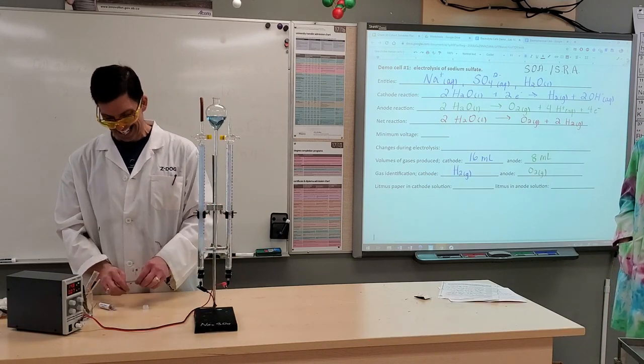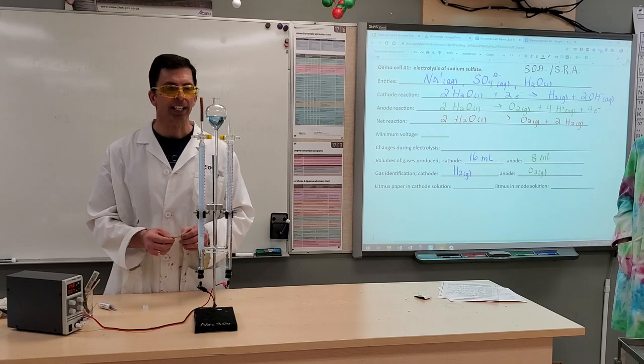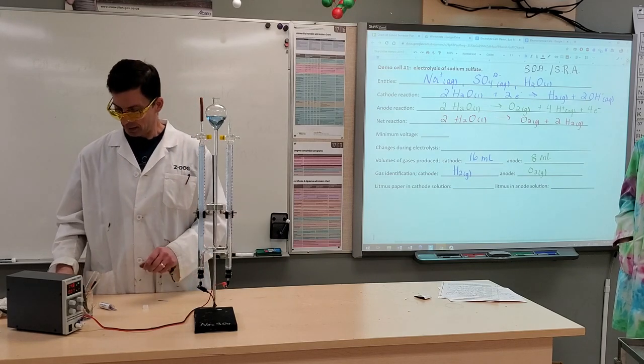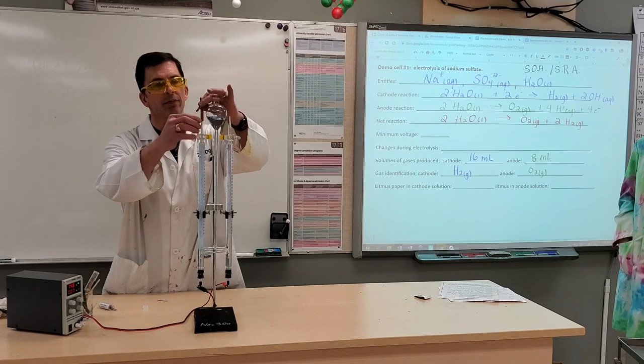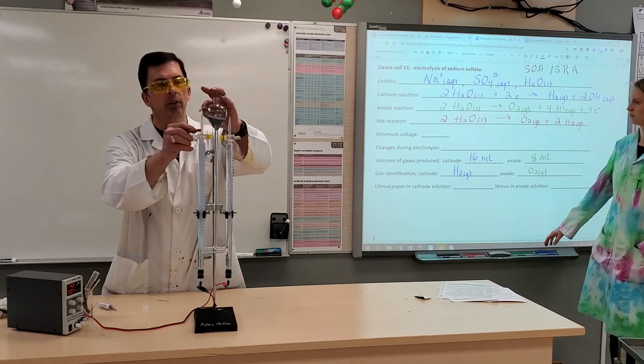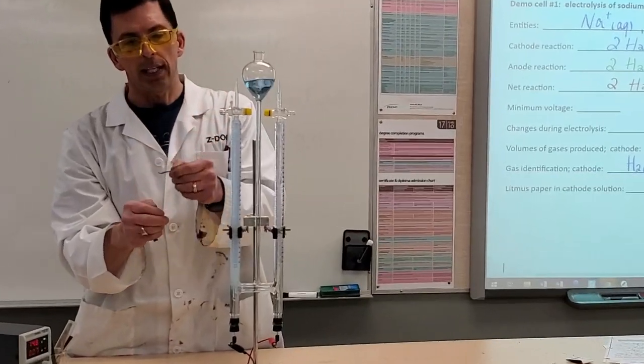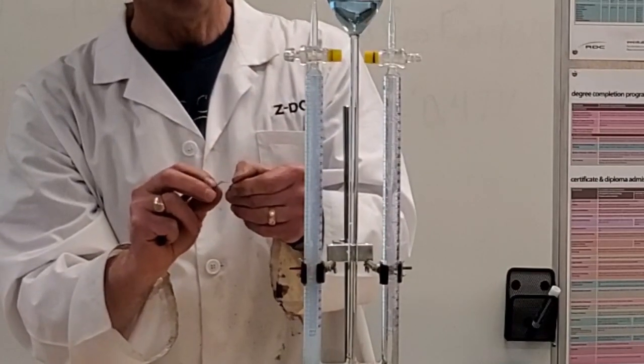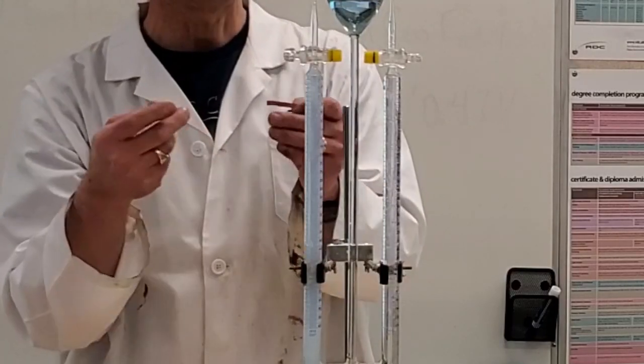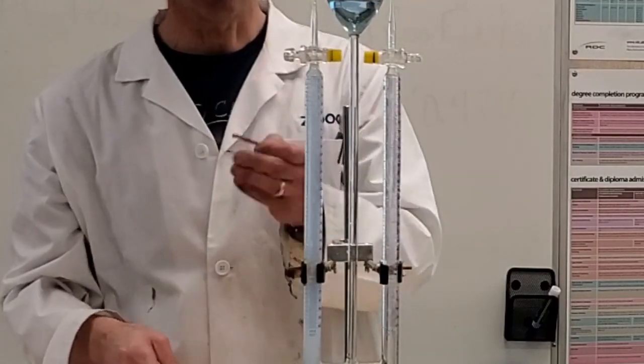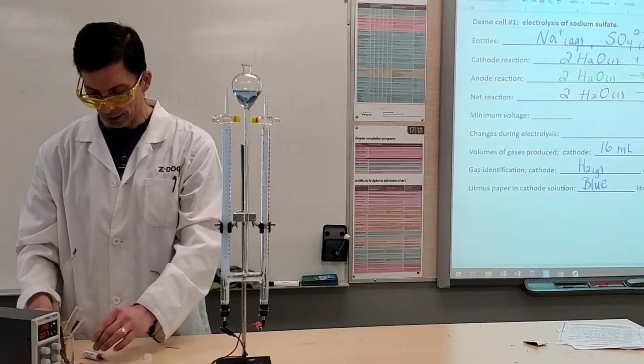And just taking a look at a litmus test as well. If we get a sample of the liquid produced here, the litmus, the red litmus is turning to blue. Further verifying the production of hydroxide ions at our cathode.